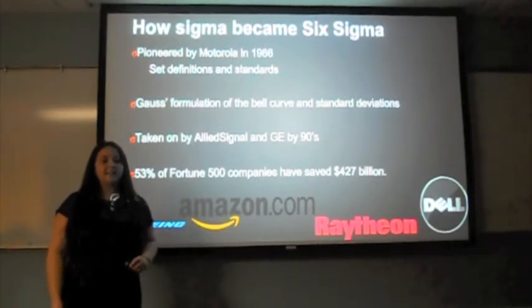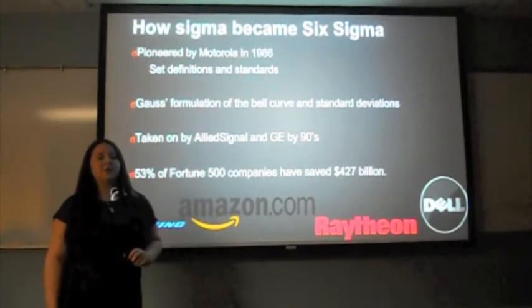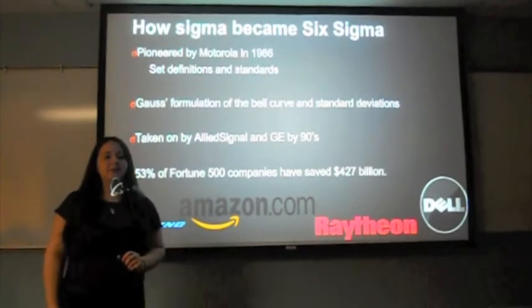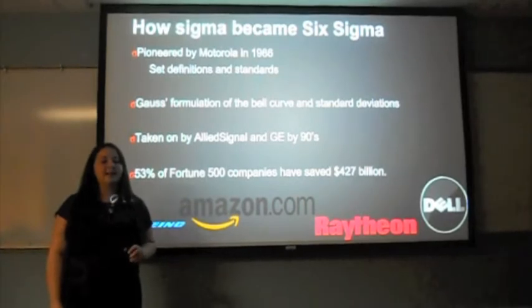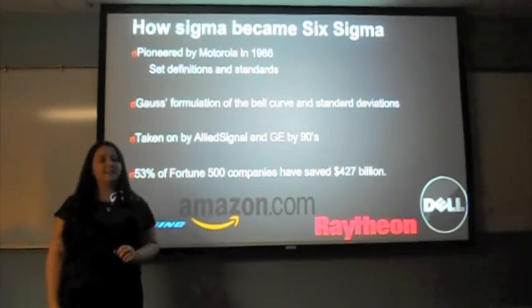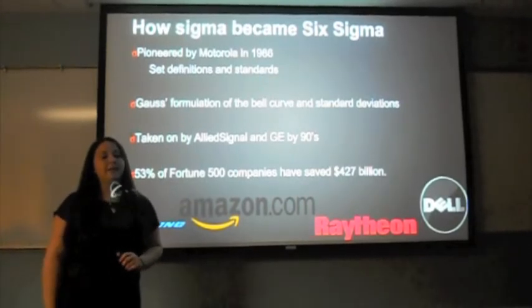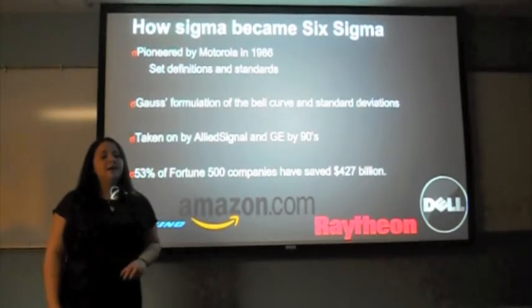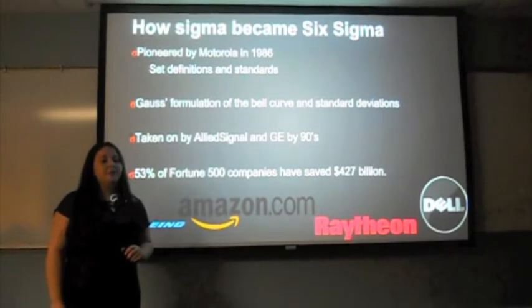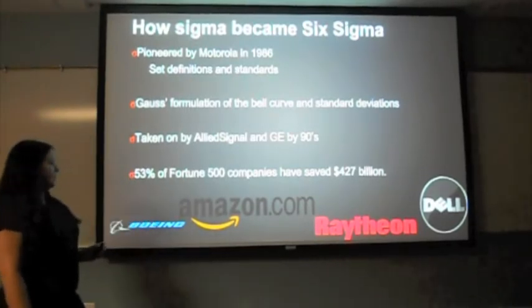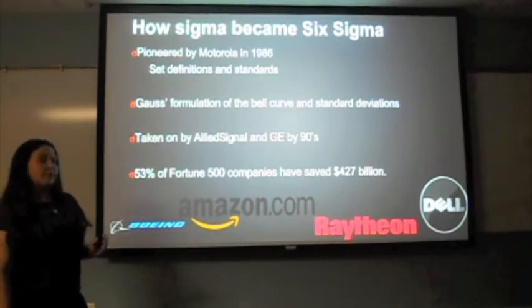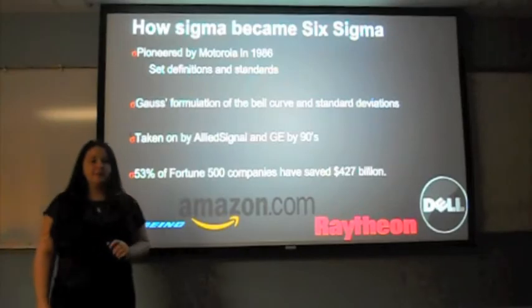Today, Six Sigma is used within 53% of Fortune 500 companies and has saved them approximately $427 billion. Some other companies using Six Sigma are Boeing, Raytheon, Dell, Amazon, and Northrop Grumman.